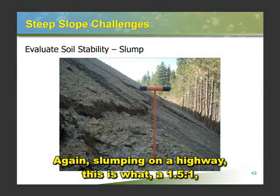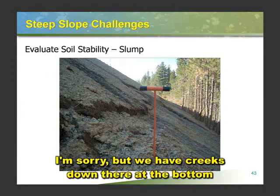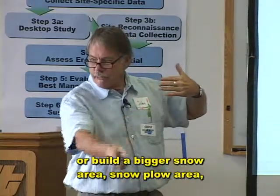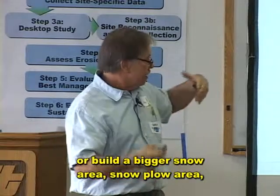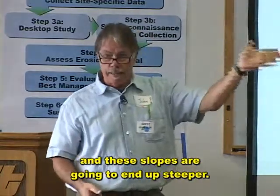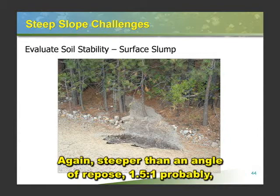Again, slumping on a highway. This is a one-and-a-half to one typical kind of highway slope. We have creeks down there at the bottom and we have to widen the highway or build a bigger snow plow area, and these slopes are going to end up steeper. Here's another type of slump on a highway — again steeper than angle of repose, one-and-a-half to one probably.